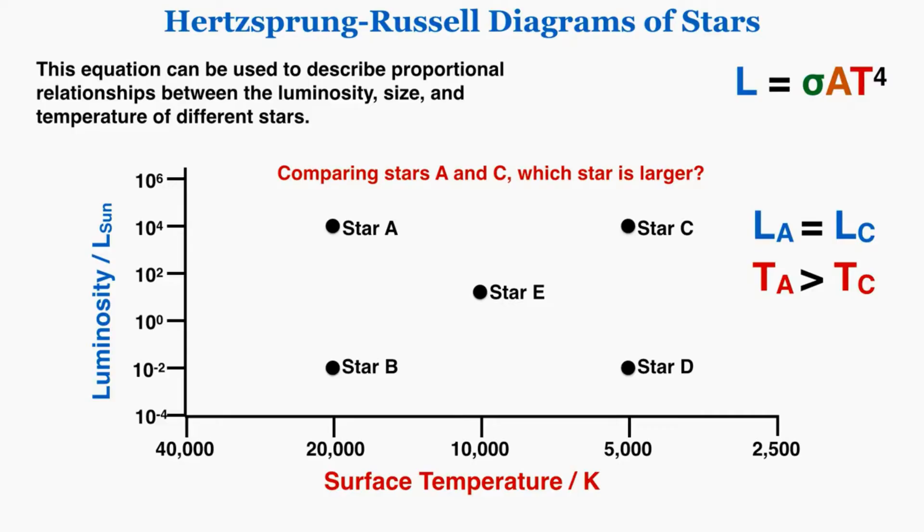If I take that equation for luminosity on the top and rearrange it to find the surface area of a star, this is the equation that I get. Because star A and star C have the same luminosity, but star A has a greater temperature than star C, the denominator of star A's area will be greater than the denominator of star C's area. Their numerators are the same, but there's a number in the denominator of A that is bigger than the denominator of C. If you have a bigger denominator that means that as a whole your number is smaller, so the surface area of C is greater than the surface area of star A, which means that star C is larger than star A.